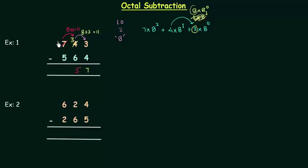This 7 has given the borrow so we are left with 6. 6 minus 5 is simply 1. So the answer is 157. Now we will move to next example.